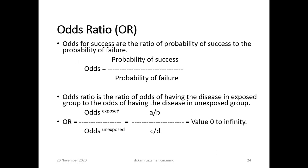Odds is the ratio of the probability of success to the probability of failure. The odds ratio is the ratio of the odds of having the disease in the exposed group to the odds of having the disease in the unexposed group.